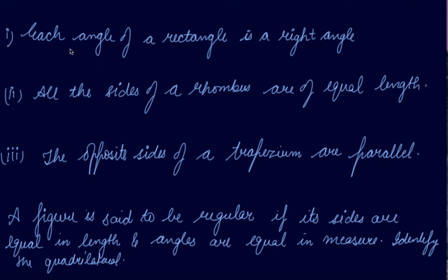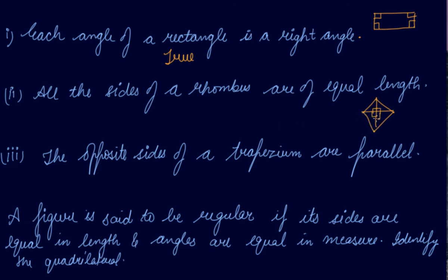Now we have to answer some questions. First: each angle of a rectangle is a right angle — true or false? Yes, each angle is a right angle, so this statement is true. Second: all the sides of a rhombus are of equal length. Since all sides are 90 degrees and equal, this is also true.